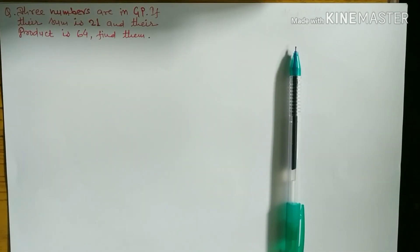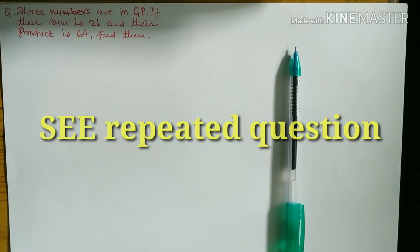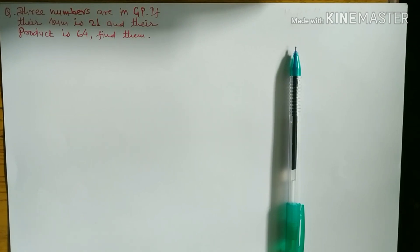Hello everyone. Today we have a question from the second chapter. Three numbers are in geometric progression. Three numbers are in GP such that their sum is 21 and their product is 64. Find the numbers.